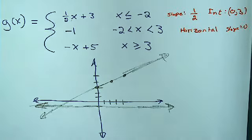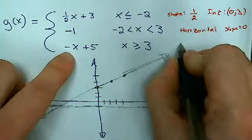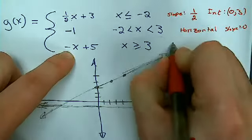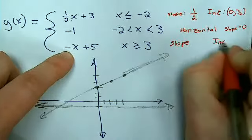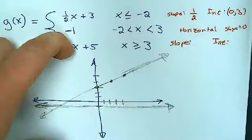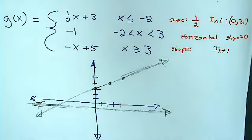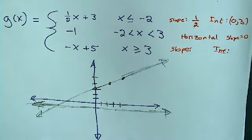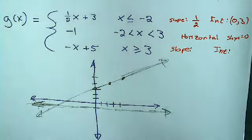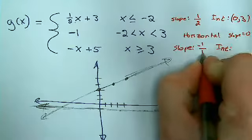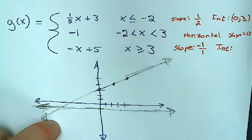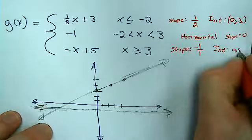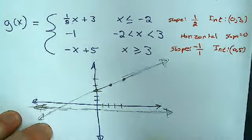Now, my last one up here says I want negative x plus 5. Well, it's not horizontal because there's an x in it. So what's that line look like? Negative 1 is the slope. So negative 1 over 1. So I go down 1 over 1. And the intercept? 5.